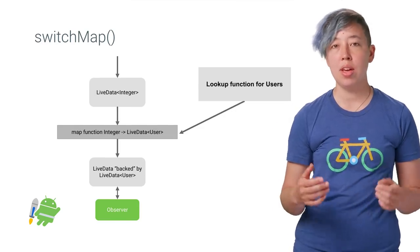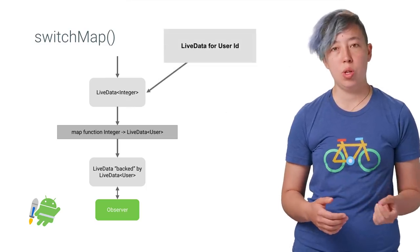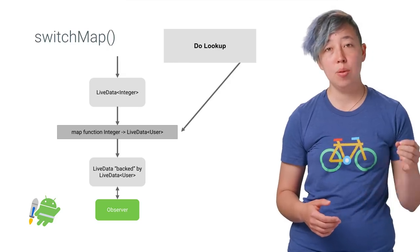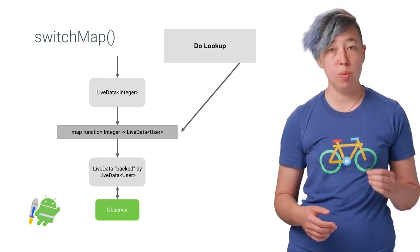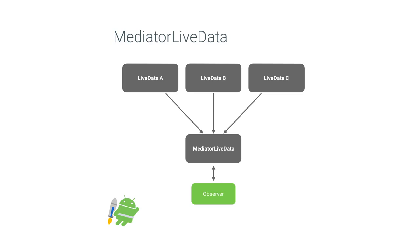An example of SwitchMap: if you have a bunch of users stored in a Room database, you might have a lookup function for those users. Using SwitchMap, you'd have a LiveData for the user ID. Whenever the ID changes, your user lookup function would be called with that ID. The result LiveData now references the newly found user LiveData. No matter how many different times you call this lookup function and get a different LiveData, your UI only needs to observe the result LiveData once — which is the power of SwitchMap. If you want to make your own custom data transformations, you should look at the MediatorLiveData class. MediatorLiveData includes methods to add and remove source LiveData objects, and you can combine and propagate events from all of these sources downstream.